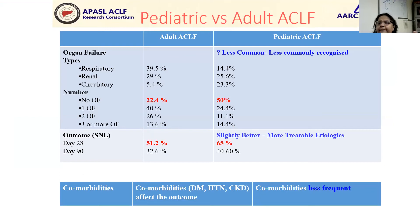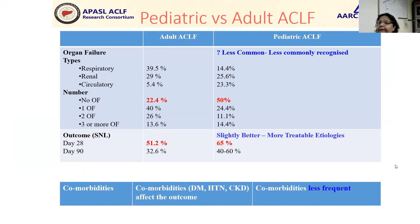Comparing pediatric ACLF with adult ACLF, we find that organ failures do happen in pediatrics but are less common. Numbers are much less and 50% may not have any organ failures at all. The outcome is also slightly better — by 28 days, 65% are still surviving, and by 90 days, somewhere between 40 to 60% are still surviving. One reason could be that we mostly have underlying treatable diseases, and another that adult patients have comorbidities not present in pediatric ACLF.